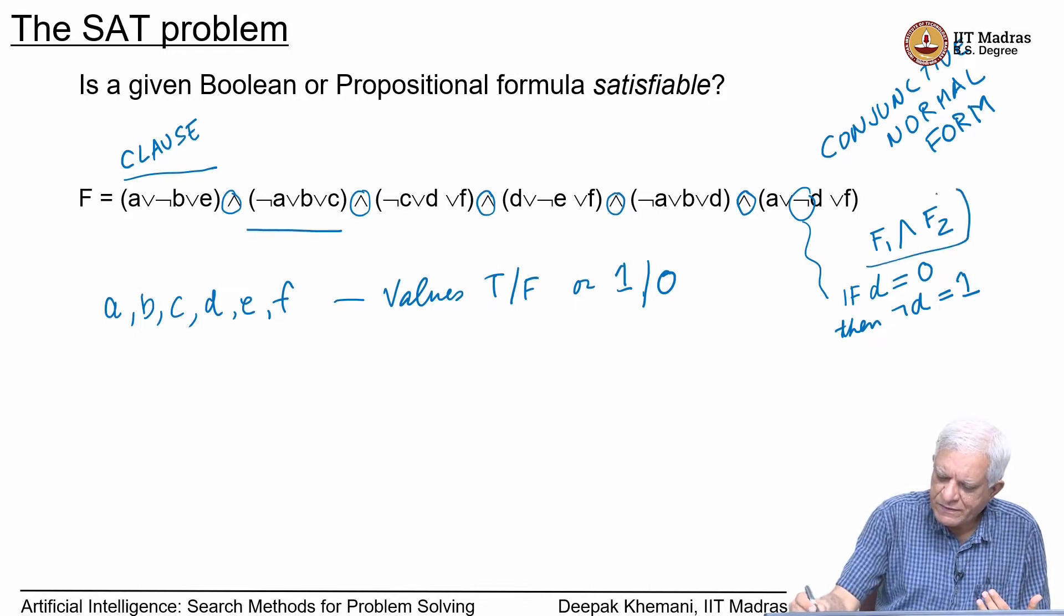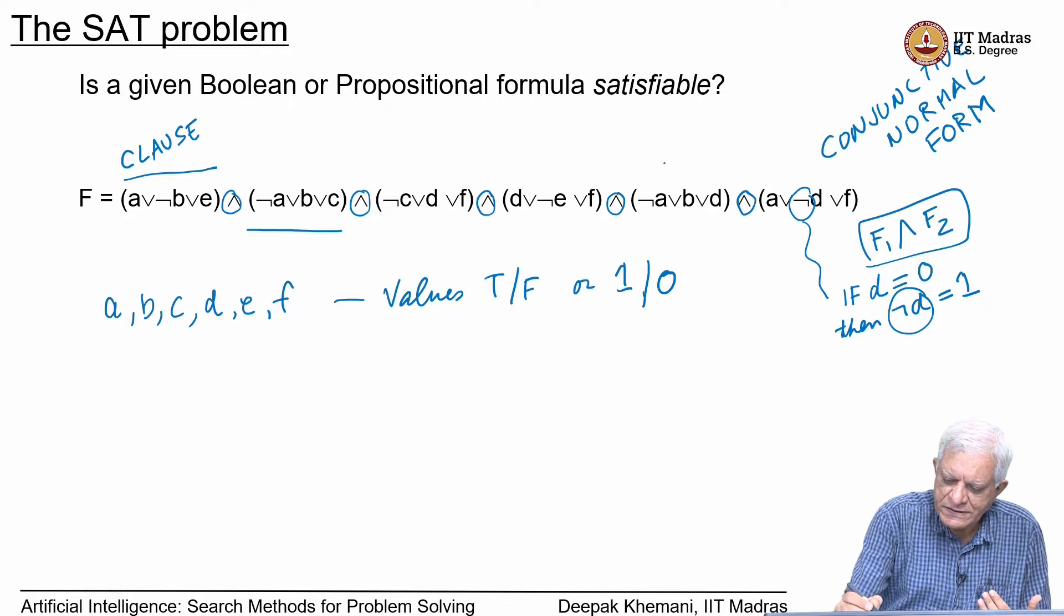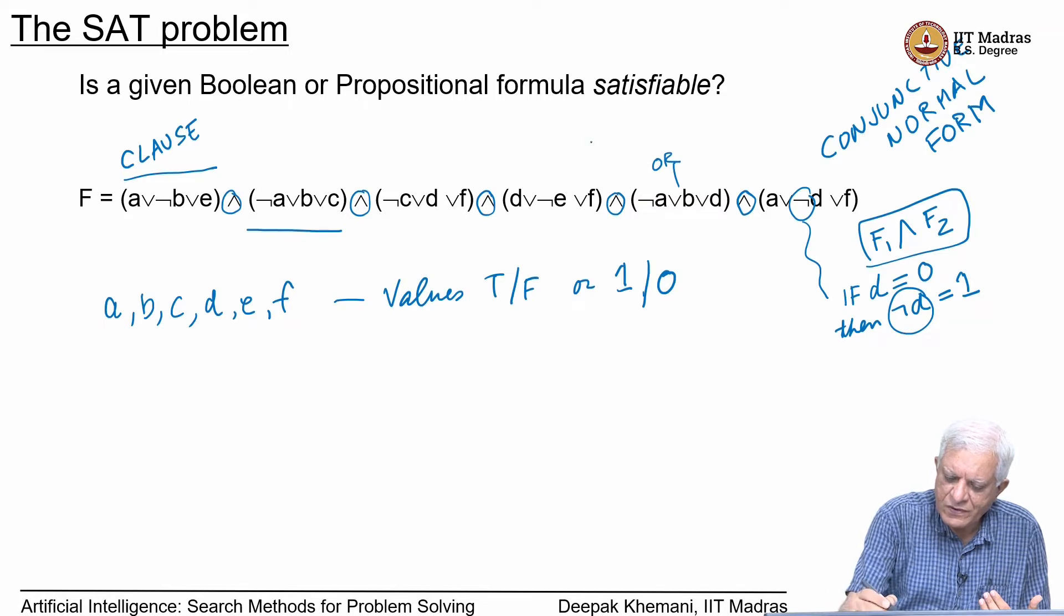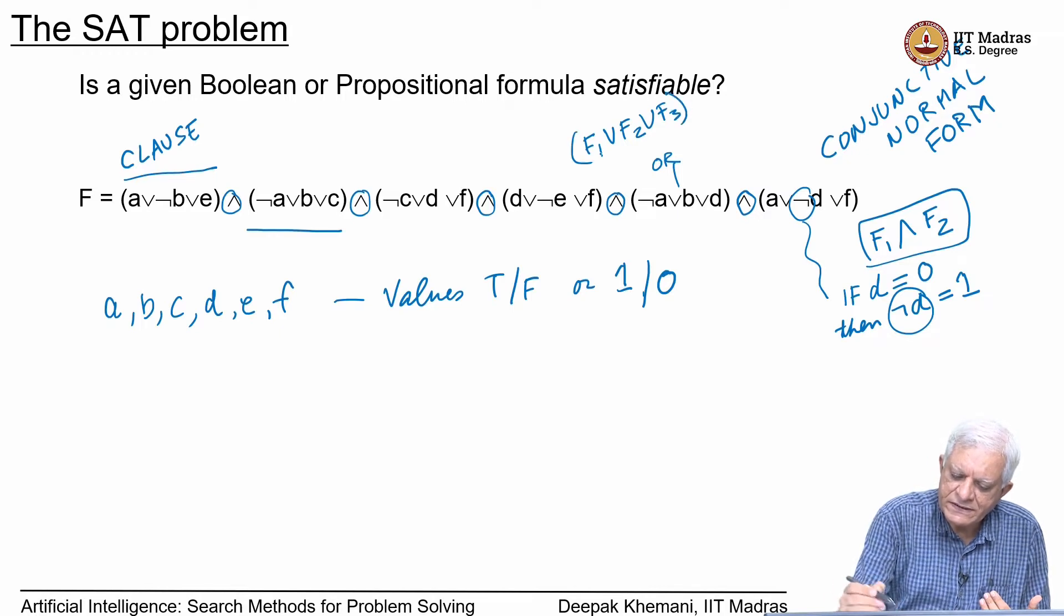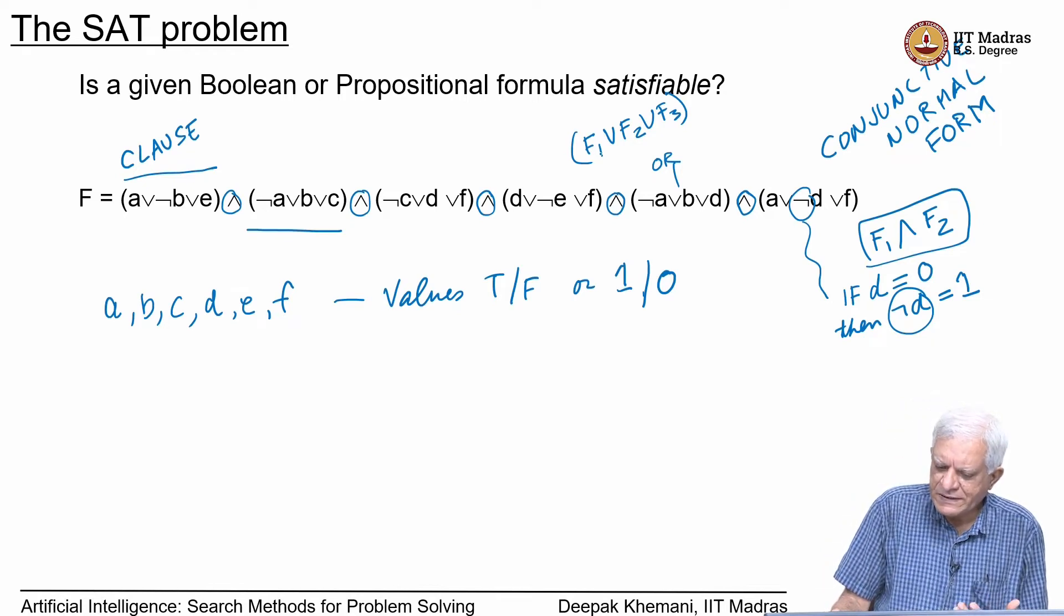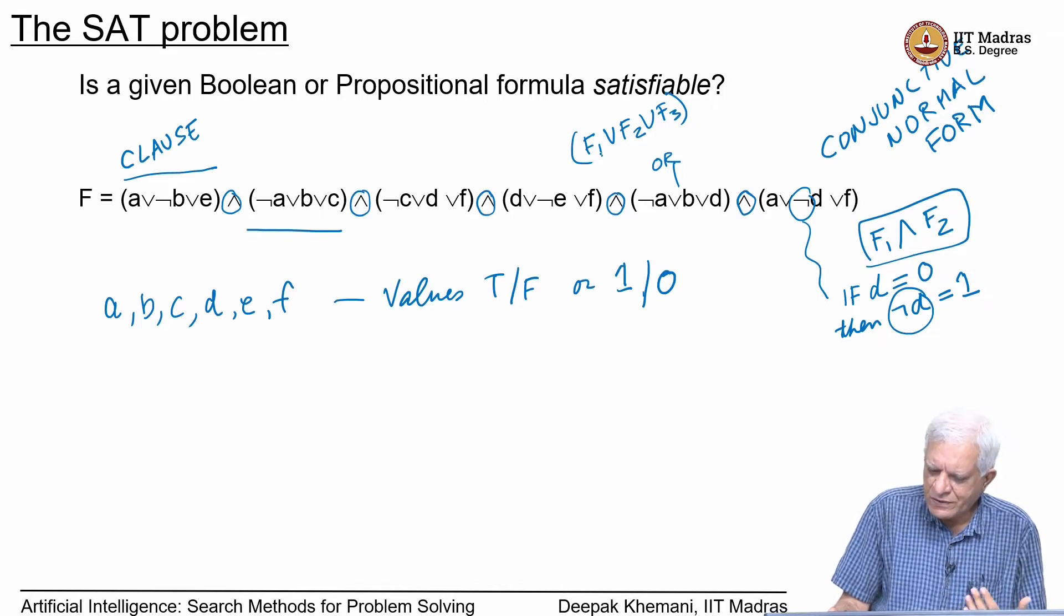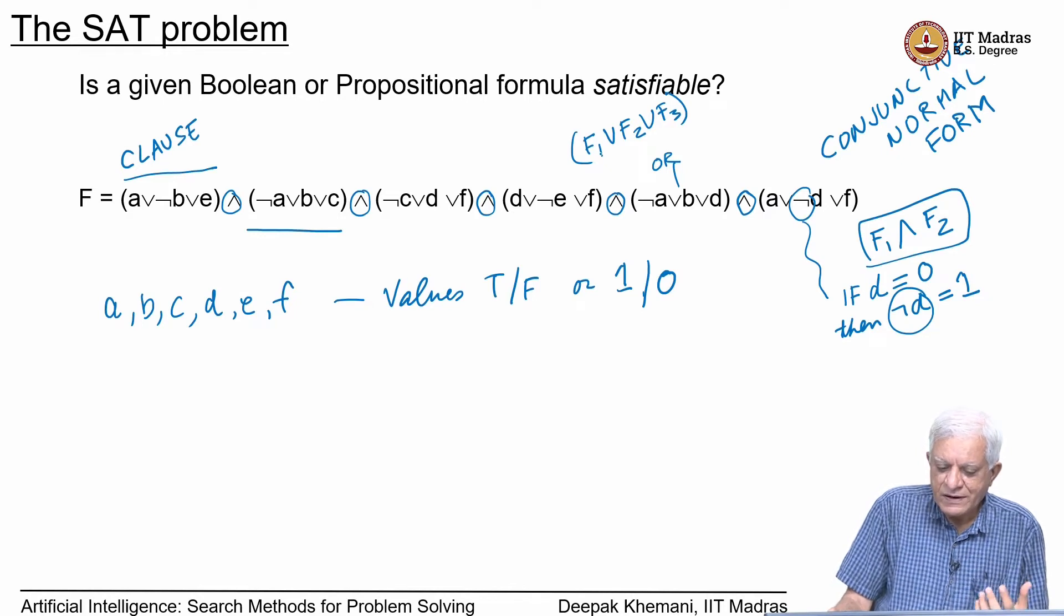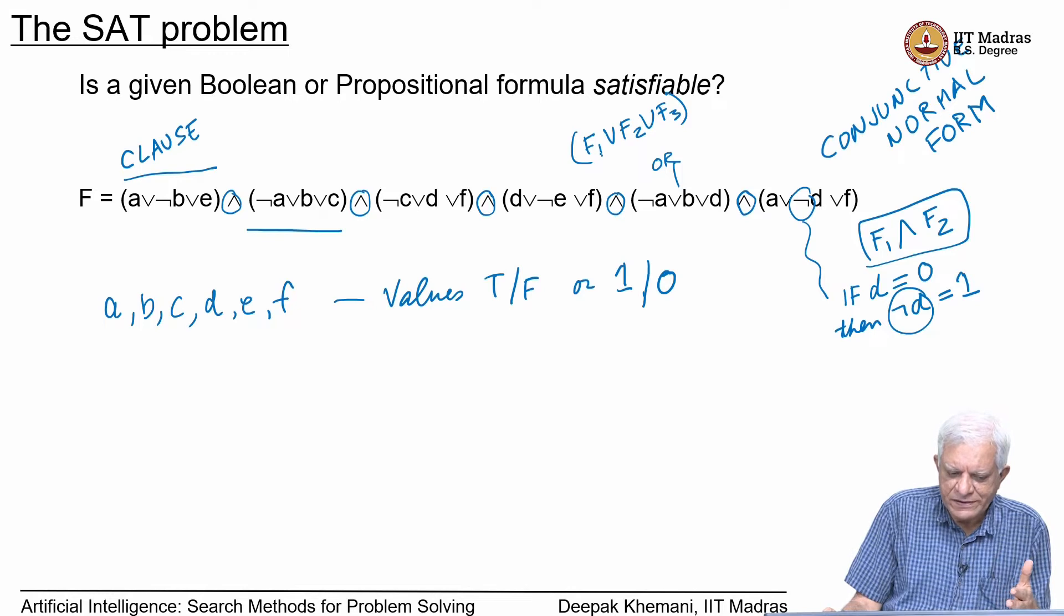First, we have the negation logical connective. The semantics of negation is as follows: if D is equal to 0, then negation of D equals 1 and vice versa. Negation basically flips the truth value of its constituent. If D was 0, if we have chosen a valuation D equals 0, then NOT D would be 1. We have seen AND, we have seen negation. The third thing we need to see is the OR. The semantics of OR is that if we have F1 OR F2 OR F3, this clause will be true if any one of F1, F2, F3 is true. If all of them are true also it will be true, but at least one should be true.